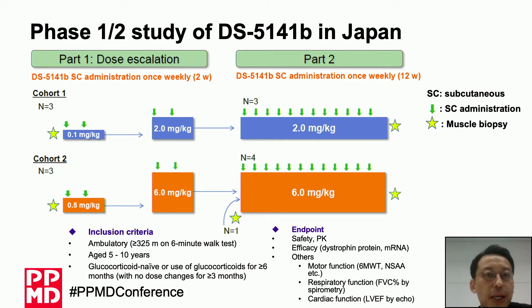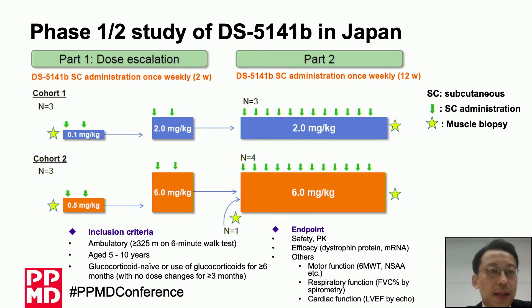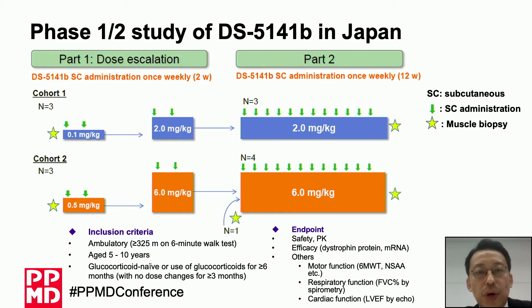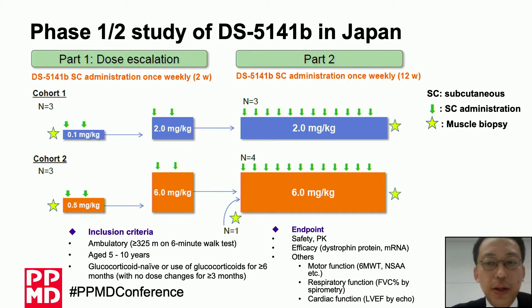Six patients were divided into two cohorts. In Cohort 1, three patients received the drug at 0.1 mg per kilogram and then 2 mg per kilogram once a week for two weeks, then 2 mg per kilogram once a week for 12 weeks in Part 2. In Cohort 2, three patients received 0.5 mg per kilogram and 6 mg per kilogram once a week for two weeks, then 6 mg per kilogram once a week for 12 weeks in Part 2, with one additional patient added. Each patient underwent a muscle biopsy before the first dose and after the final dose. Patients included were boys aged 5 to 10 with sufficient walking ability and amenable to exon 45 skipping.